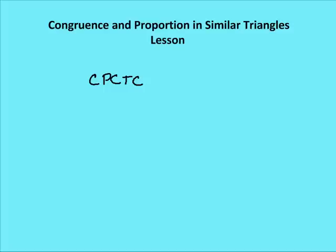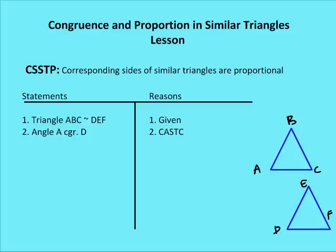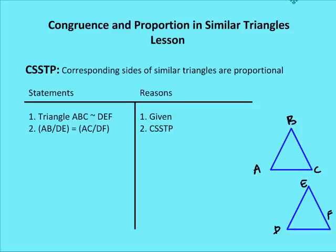Now we're going to introduce two other five-letter acronyms. The first is corresponding sides of similar triangles are proportional, or CSSTP. What that means is if we have two similar triangles — say triangle ABC is similar to DEF — then the corresponding sides are going to be proportional. So AB over DE is equal to AC over DF, and we state that by CSSTP.